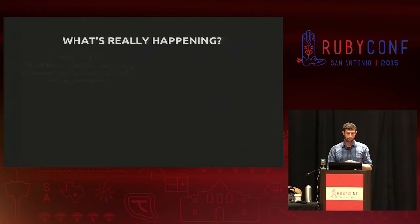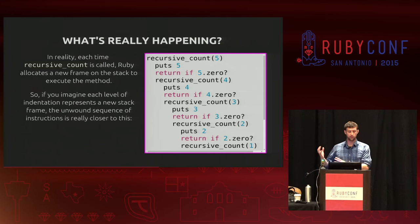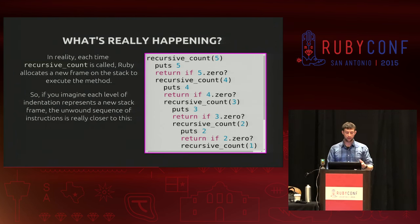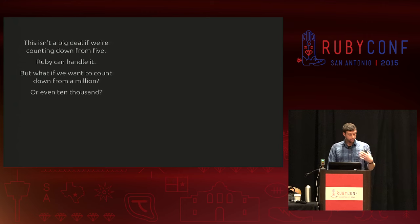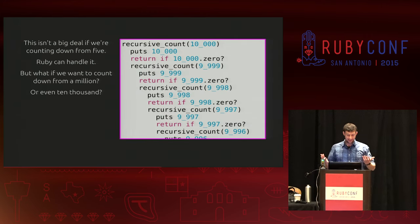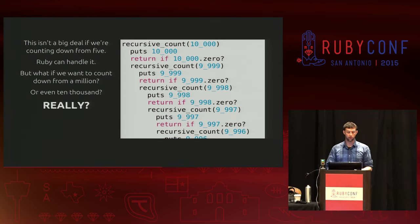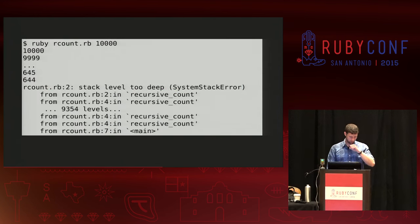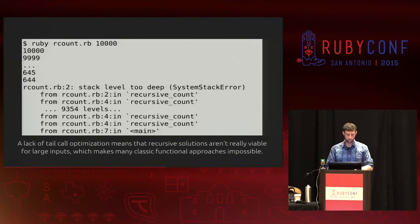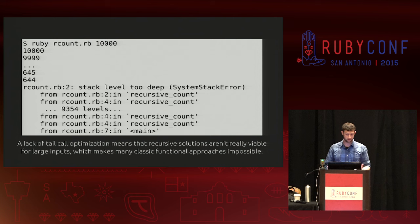In reality, each of those recursive calls — as you can see by the indentation — pulls out another stack frame and allocates more memory to execute that method. Which is fine if you're counting down from five. But if you're counting down from even 10,000, you end up with your typical 'stack level too deep' error. A lack of tail call optimization means we really can't use this recursive solution because we just run out of stack.